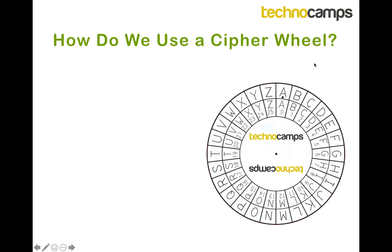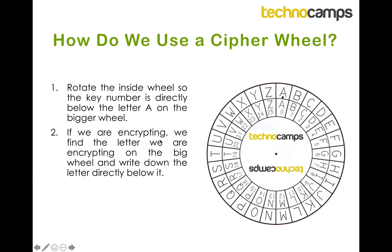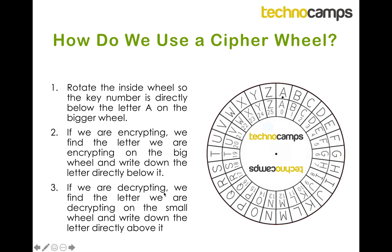Okay, so now that we've got access to a cipher wheel, how do we use it? Step one is to rotate the inside ring — the smaller of the two rings — so the key number is directly below the letter A on the bigger wheel. Right now we've got the letter A below the letter A, so we've got a shift of zero. If we're going to be encrypting a message, we need to find the letter we are encrypting on the outside ring and write down the letter that's directly below it. If we are decrypting, we find the letter on the smaller ring and write down the letter directly above it.